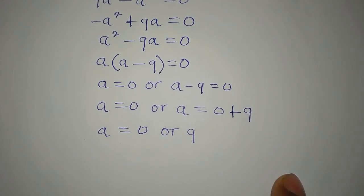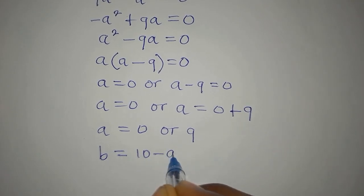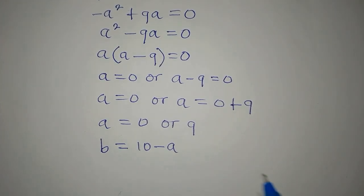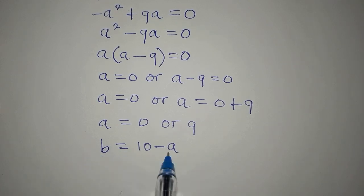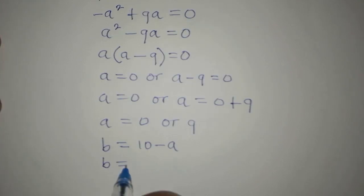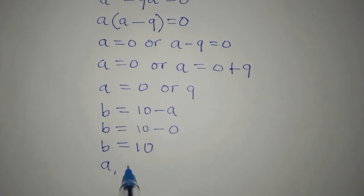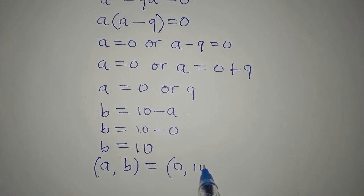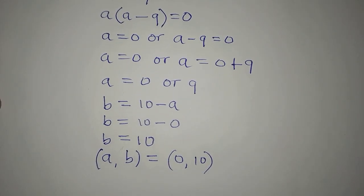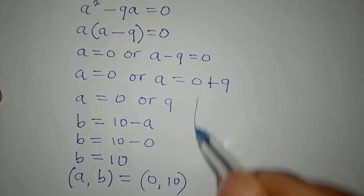We go back to equation 3 where B equals 10 minus A. Since we have two values of A — 0 or 9 — we expect two values of B. Working with A equals 0: B equals 10 minus 0, so B equals 10. Therefore our first solution (A, B) is (0, 10), meaning when A is 0, B is 10.